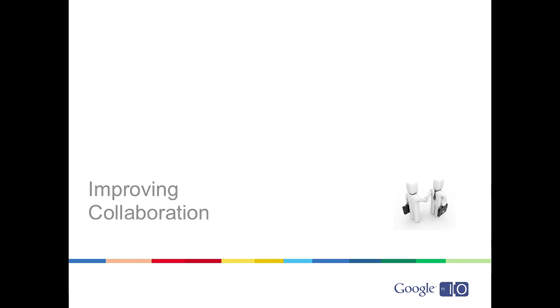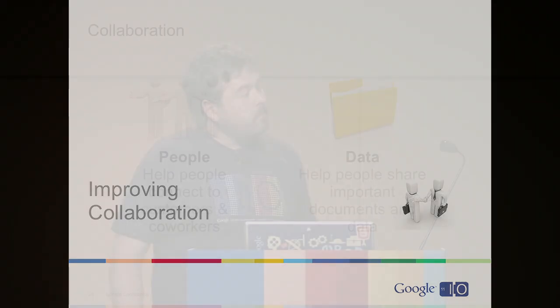So we're going to talk next about collaboration. When we talk about collaboration, there are two aspects: one is collaboration among people — your customers, coworkers, suppliers, people you need to connect to. The other aspect is the actual data that we're collaborating on. So how do we use integration to make this more effective?